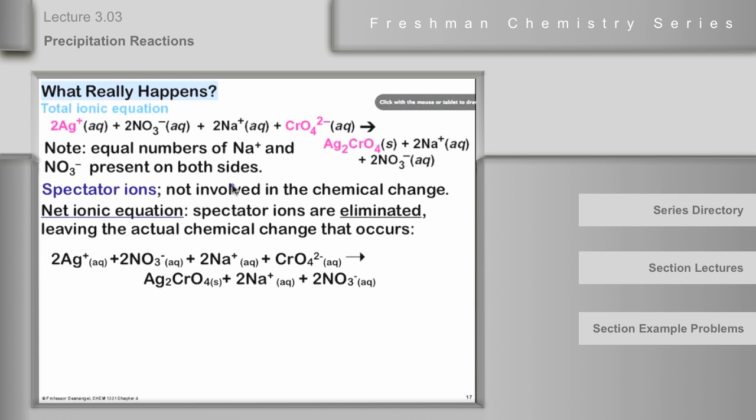All right. So we can go from the total ionic equation to the net ionic equation by getting rid of the spectator ions. And we simply, anything that's on the left side and the same amount as on the right side, we can simply draw a line through them and eliminate them. So the nitrates go out and the sodiums go out. And we are left, once they're gone, with the net ionic equation. Two silver ions aqueous plus chromate ion aqueous goes to Ag2CrO4 solid. That's what really happens. That's the net ionic equation. Does anybody have a question about those three kinds of equations?